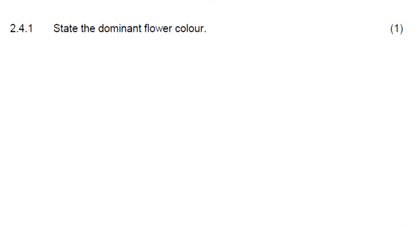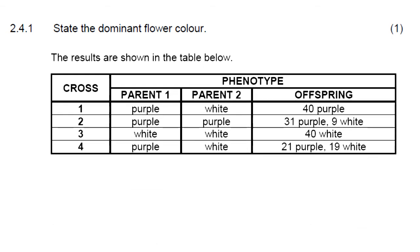So in our first question we start with question 2.4.1. State the dominant flower color. For this we go back to our table. And as you can see, every time we cross white by white, in cross three, we get white offspring. But when we cross purple and purple, we suddenly get white offspring as well as purple offspring. Which tells us that white is our recessive color and therefore our answer is purple. That would be our dominant characteristic.